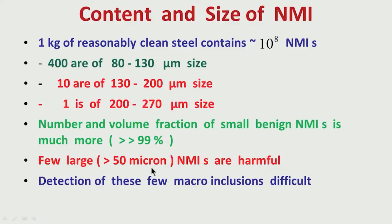Only about 400 inclusions are of 80 to 130 micron size. Only about 10 are of 130 to 200 micron size. The probability of having only 1 large inclusion of 200 to 270 micron size in that 1 kg of steel is very low. Most inclusions are very small in size and hence they are benign — less harmful. We need not really bother about those very fine inclusions. What we have to bother about is a few large NMIs, which are really harmful from the quality point of view. By large, we mean more than 50 micron in size.